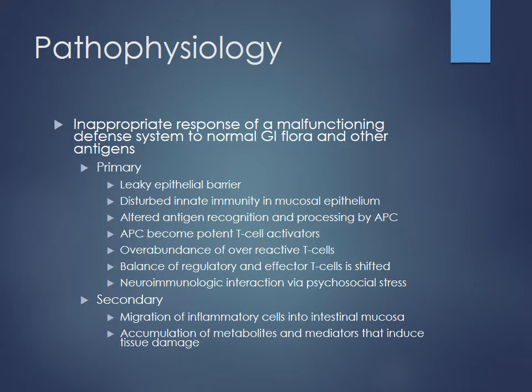We end up having overactive inflammation within the GI tract. Since the GI tract is a somewhat dirty area with a lot of GI flora, that can also influence inflammation. You see things like a leaky epithelial barrier, disturbed innate immunity within the mucosal epithelium — all of these influence antigen-presenting cells and T cells, which become overactive. Based on that, the drugs we're going to use are immunomodulators and steroids — anti-inflammatories targeting the inflammation cascade at several sites.